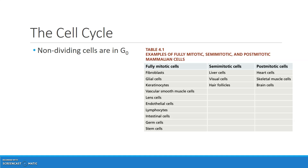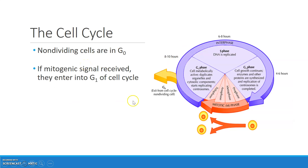Cells in G0 are able to enter back into the cell cycle if they receive a mitogenic signal. They are mostly just performing their physiological functions, which don't require them to be constantly dividing. A cell in G0 that is not dividing can actually enter back into this four-phase cycle at the point of G1, if it receives a mitogenic signal or a signal to divide.